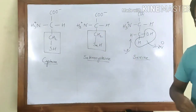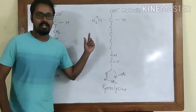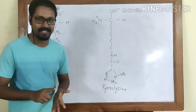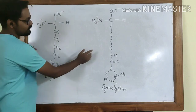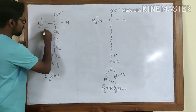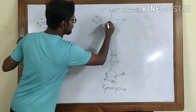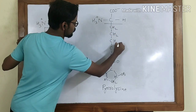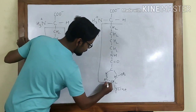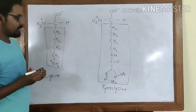Now let us move on to the next one, which is pyrrolysine. As the name suggests, it has some similarity to lysine. This is our structure of lysine and this is our pyrrolysine, with this as its R group. Look at this humongous R group in pyrrolysine — it has a large chain ending in a five-membered ring at the end.